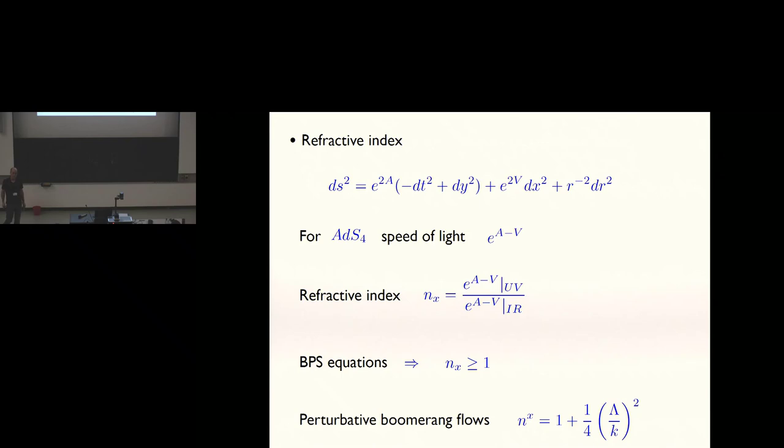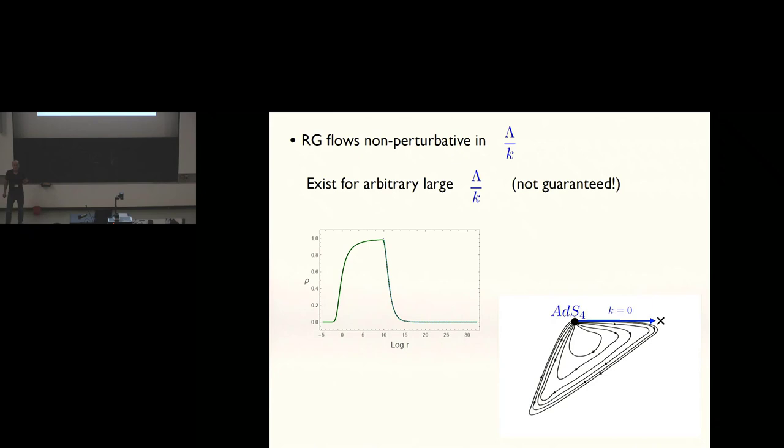For the boomerang flows, you could sort of see that n of x is proportional to the dimensionless parameter lambda over k squared. Actually, interestingly, you can show by solving the BPS equations that this is always bigger than one. In fact, in all examples we've found, this is always bigger than one. We don't have a proof for every construction, but I suppose we conjecture that that's always true. Boomerang flows in holography always have this refractive index bigger than one. If we want to go beyond the perturbative flows, we have to go back to the BPS equations and start solving them numerically. They're ODEs, but you have to solve them numerically with the appropriate boundary conditions at the UV.